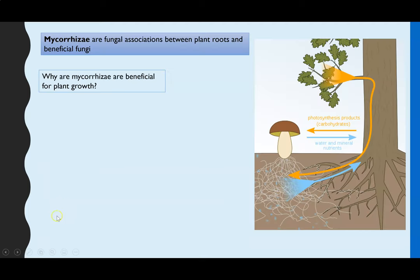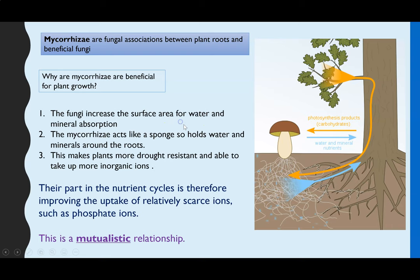Within the spec you also need to be aware that for nutrient cycles, mycorrhizae are really important. These are fungi found around certain plant roots. They're beneficial because the fungi help roots reach a much larger surface area for water absorption, and the fungus acts like a sponge, absorbing and holding lots of water and the mineral ions dissolved in that water.